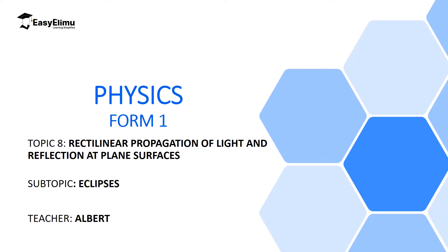Welcome to ECLIMU, Learning Simplified, and welcome to this lesson. In the introduction to physics, we discussed some of the phenomena or extraordinary events that cannot be explained without the knowledge of physics — among them were the falling of bodies towards the ground, the rising of fluids inside a drinking straw, and the formation of eclipses. In this lesson, we are going to discuss eclipses as a proof that light travels in a straight line.